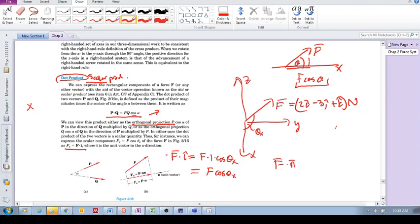Well, I've got my first vector. I need a second vector pointing in the direction of X, so that I can dot this vector with that vector, and then I can get the component Fx.